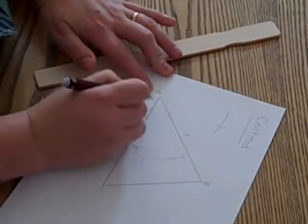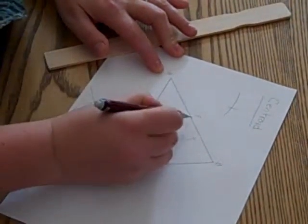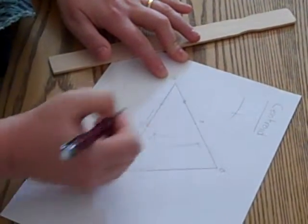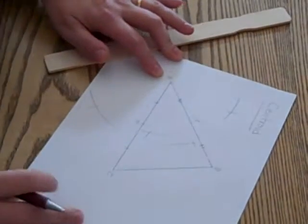And again, segment AE is congruent to segment EB. So I'm going to use two congruency notches to show that.